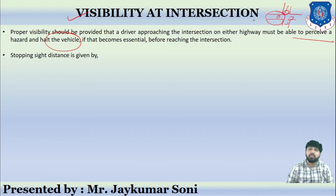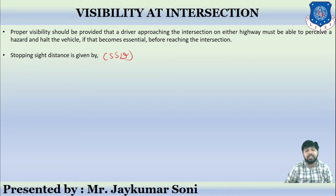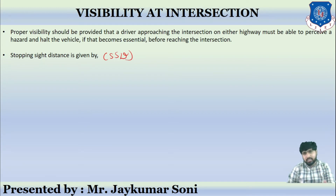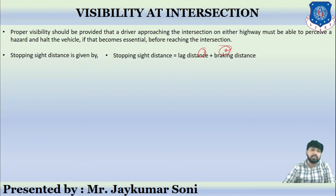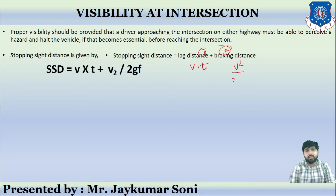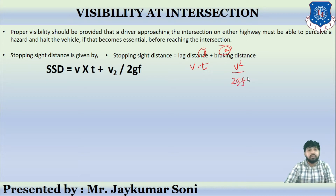For that, we need proper knowledge of stopping sight distance, called SSD. You have already learned the detailed description of SSD — overtaking sight distance, sight distance at intersections, and stopping sight distance — in the highway geometry design section. The stopping sight distance is the summation of lag distance and braking distance. The equation is: SSD = v·t + v²/2gf, where v is the speed of the vehicle in meters per second.